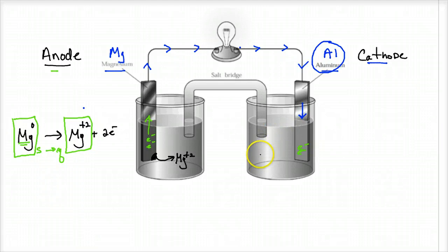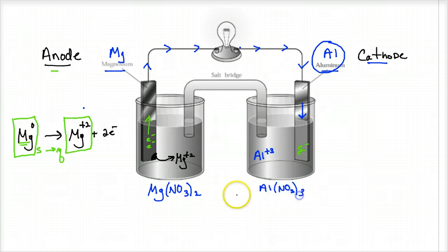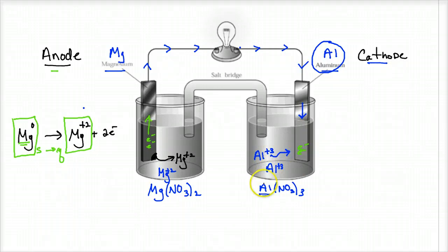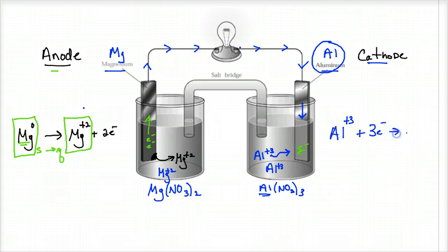Already in solution, you have aluminum³⁺ ions. These cells are often set up with magnesium nitrate in one beaker and aluminum nitrate in the other — nitrates are soluble, so you have Mg²⁺ in one solution and Al³⁺ in the other. The Al³⁺ already in solution is going to absorb the electrons coming from the anode. Aluminum³⁺ wants three electrons, so we're not yet balanced with just two electrons — we need to work on that.